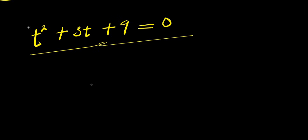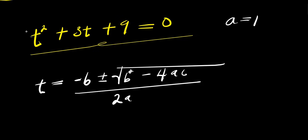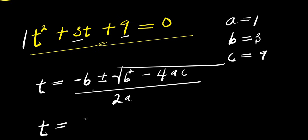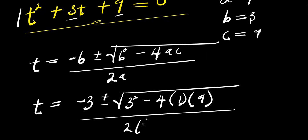Writing the quadratic formula: t equals negative b plus or minus square root of b squared minus four a c, all divided by two a. We identify a equals one, which is the coefficient of t squared; b equals three, which is the coefficient of t; and c equals nine, which is the constant. So t equals negative three plus or minus square root of three squared minus four times one times nine, divided by two times one.